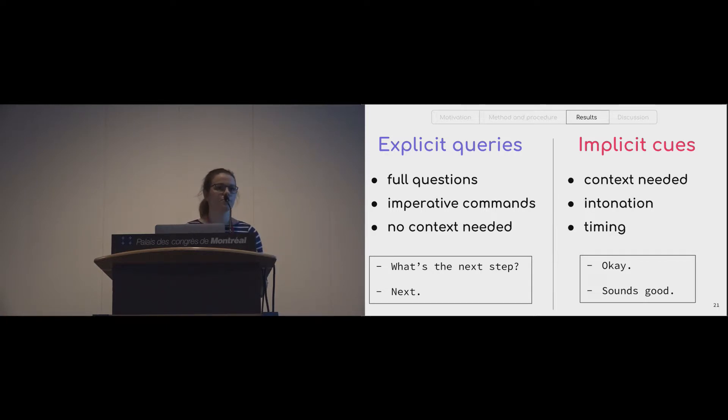We classified user utterances into two categories that we called explicit queries and implicit cues. For explicit queries, we defined them as utterances that were formulated using full-sentence questions, for example, 'what's the next step,' or imperative commands like 'next.' They were characterized by the fact that they did not need any context to be interpreted. On the other hand, with implicit cues, their main characteristic was that you absolutely needed some context to understand what the person was asking for. This context could be conversational, so what turns happened before and after, it could be timing, it could be intonation, or it could be all of them together.